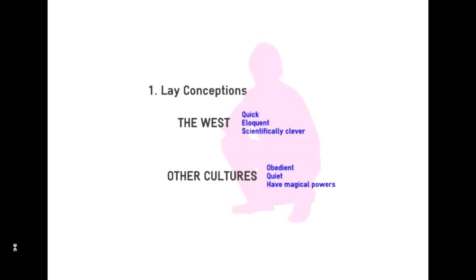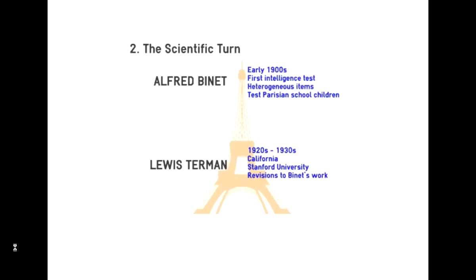Later on, people started to look at this more scientifically. This began in the 1890s, when a Frenchman named Alfred Binet started the first standardized intelligence tests. He began in 1899, testing Parisian school children using heterogeneous items. This was when we first saw standardized tests of intelligence — these are the origins of the IQ tests we still know today.